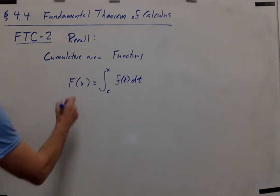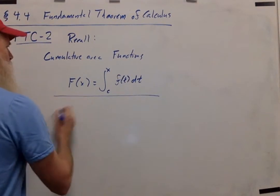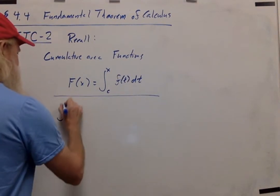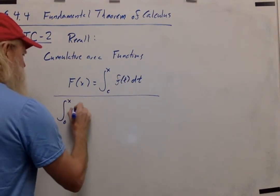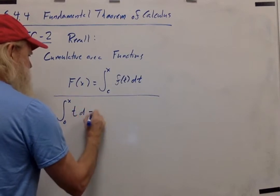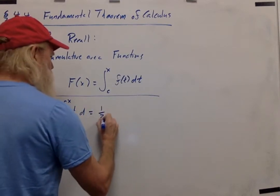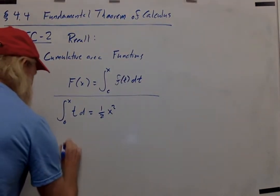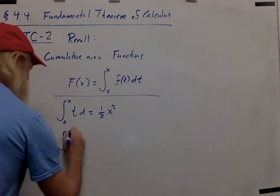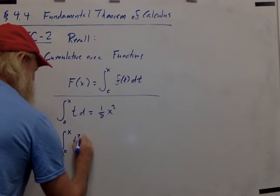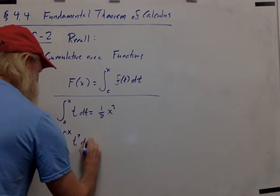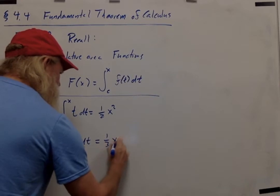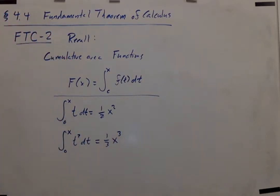And we did two examples. We found that the integral from 0 to x of t was equal to 1/2 x squared. And we also learned that the integral from 0 to x of t squared was 1/3 x cubed.